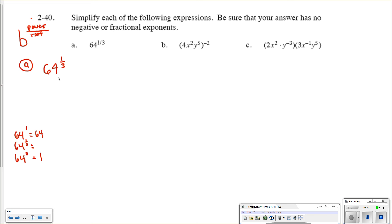Let's take a look and see what we can do. Being that the numerator is the power and the denominator is the root, this is the same thing as 64 to the first power, and we're taking the third root of that, or the cube root.